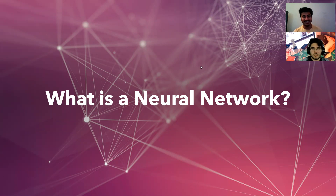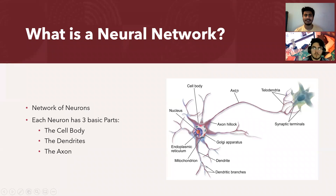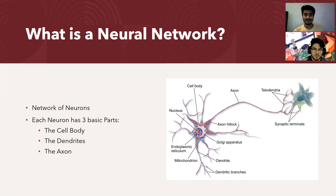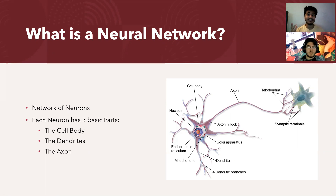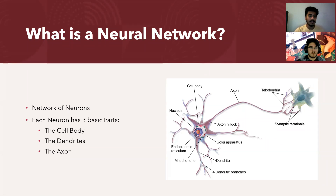So basically what a neural network is — it's a network of neurons. When we say neural network in this context, we're more on the computer science side, but neural networks are heavily inspired by our brain. That's basically how artificial neural networks were designed, and it's important to know why they were inspired by our brain in the first place.